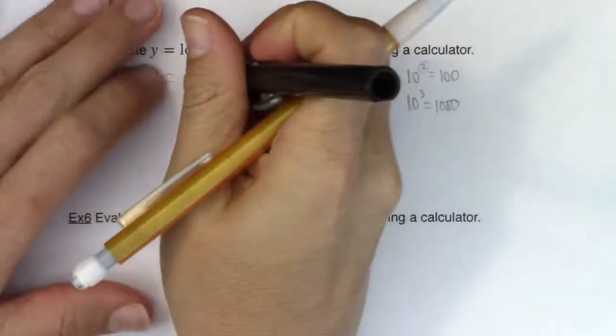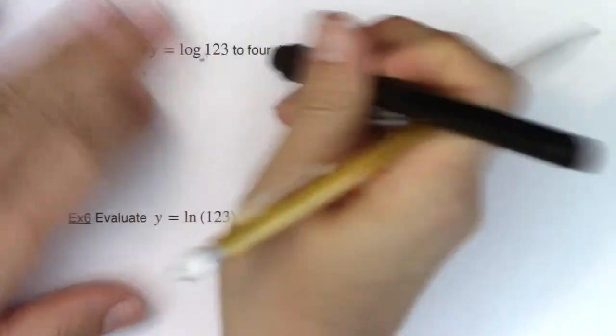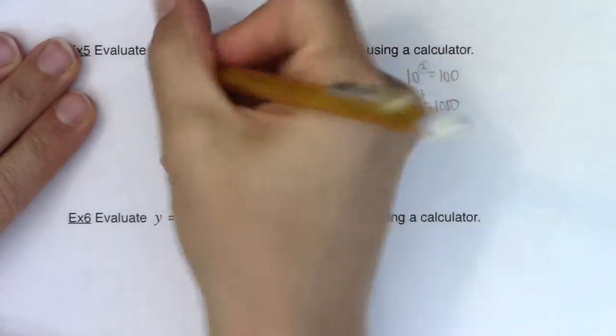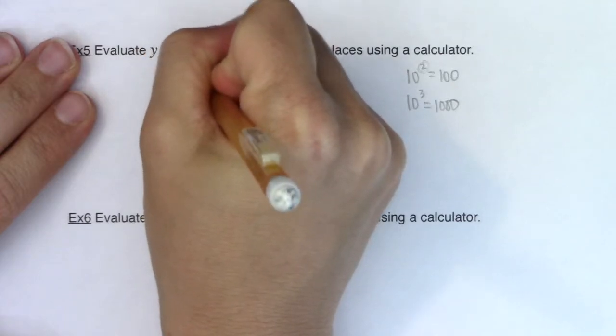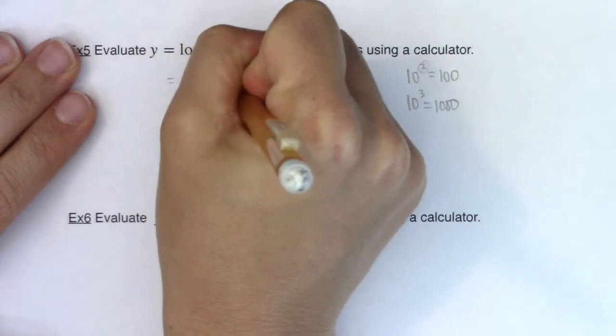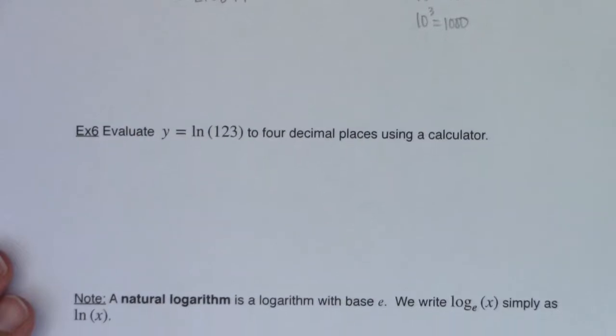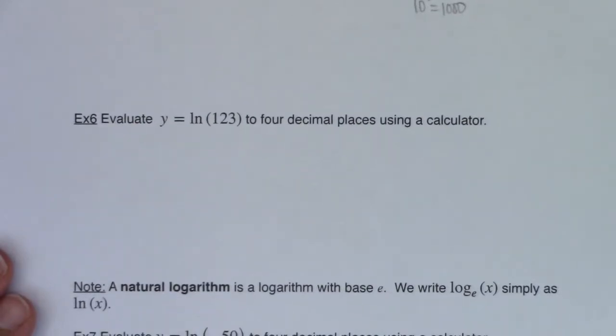So I'm going to erase my guess of 2.1 and say that this is 2.0899. Now just for time's sake, I'm going to do example six on this same video. So let me scooch this up just a bit so we get example six in view.